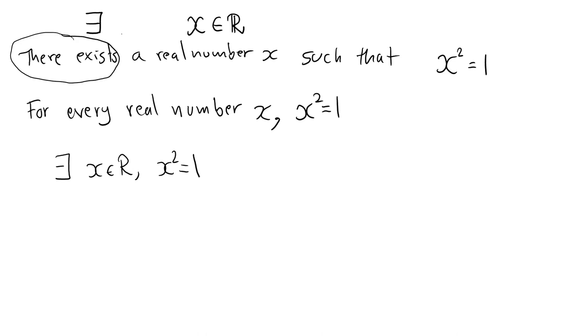The universal quantifier, for all, is also extremely common in mathematics. The symbol we use is the upside down capital letter A. The statement, for all real numbers x, x squared is equal to 1, can be written as, for all x in R, x squared is equal to 1.